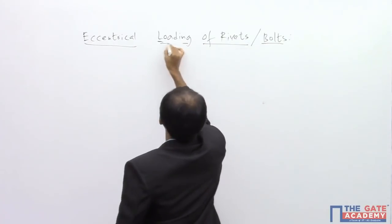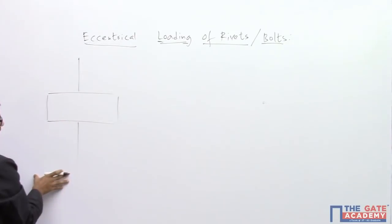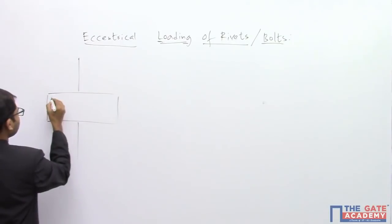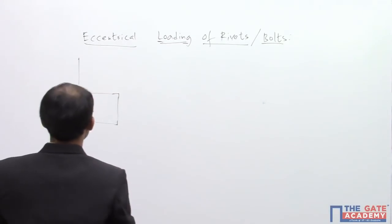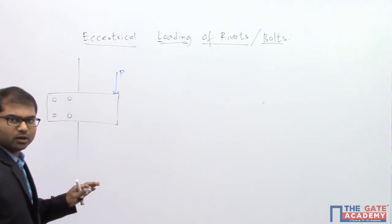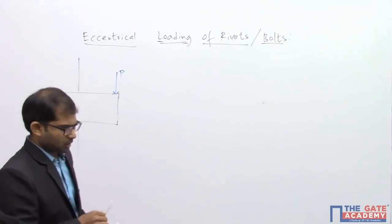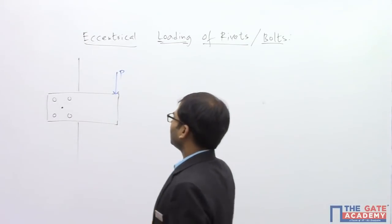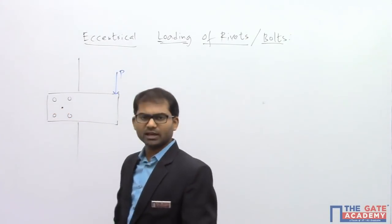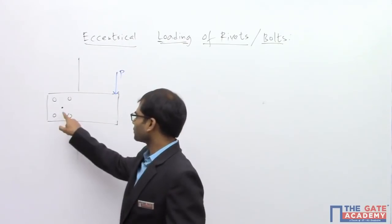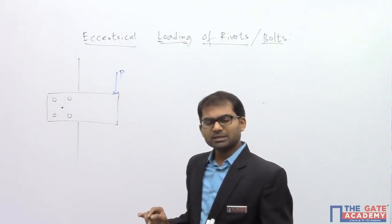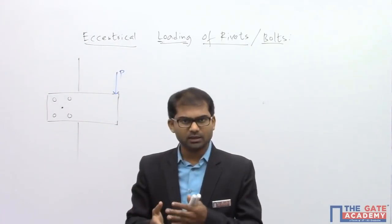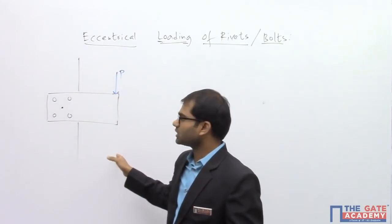In this lecture, I would like to explain eccentric loading of rivets or bolts. I'll draw the diagram first to understand what exactly eccentric loading is. This is one member, this is another member — both are attached with some rivets or bolts. A force P is applied, and the centroid of the arrangement is somewhere else. The line of action of force P is not passing through the centroid of the arrangement of the rivets or bolts — it is passing eccentrically. When it passes eccentrically, the effects of the loads are different compared to when the line of action passes through the centroid.